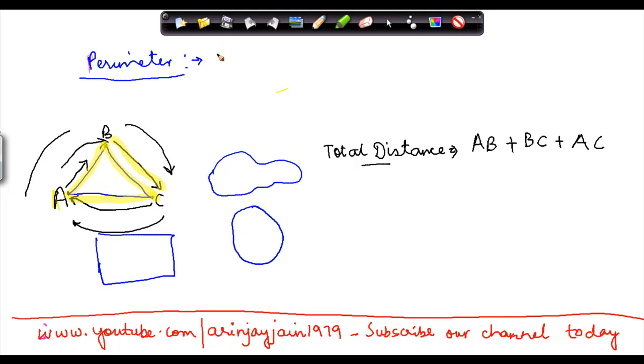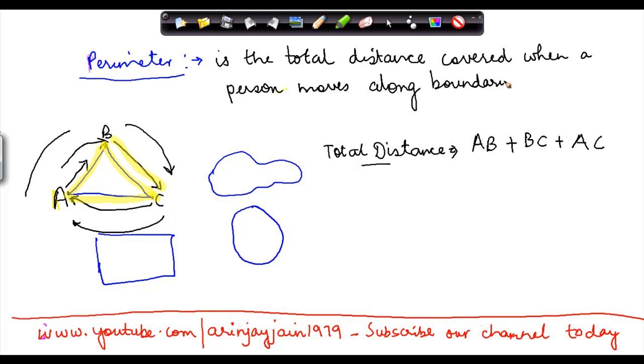Perimeter is the total distance covered when a person moves along the boundary of a closed figure.